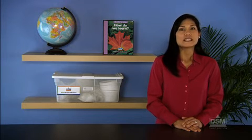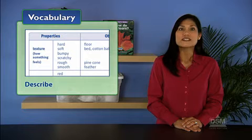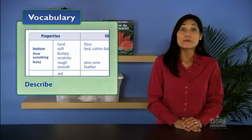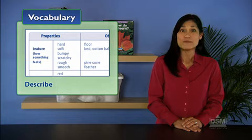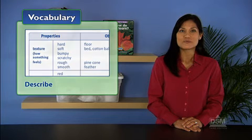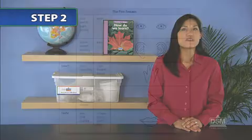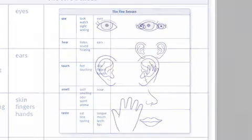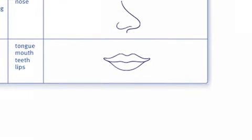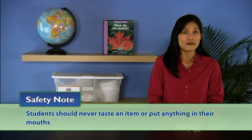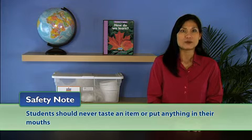Explain to the class that to describe an object is to tell about its properties, perhaps by telling or describing its color, its shape, and what it feels like, or its texture. Review with the class the five senses: see, hear, touch, smell, and taste. As you discuss the senses, make sure to tell the students not to put anything in their mouths unless they are told to do so.